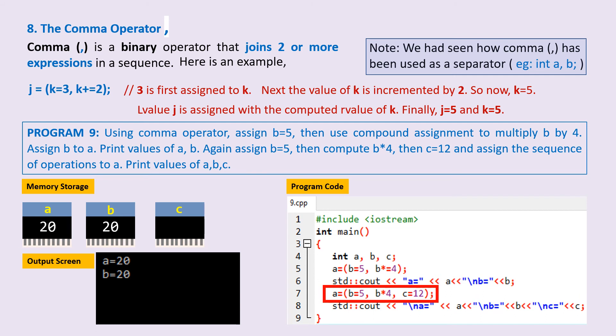a = (b=5, b*4, c=12). So first, 5 is assigned to memory variable b. Then 5 multiplied by 4 is computed, and the result 20 just floats around as it's not stated to be stored anywhere. Next, c is assigned value 12.